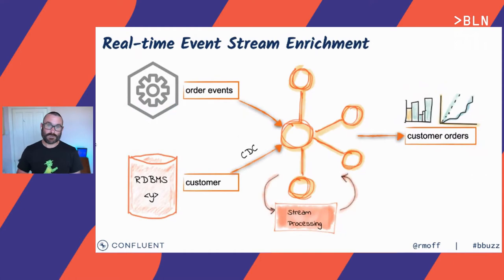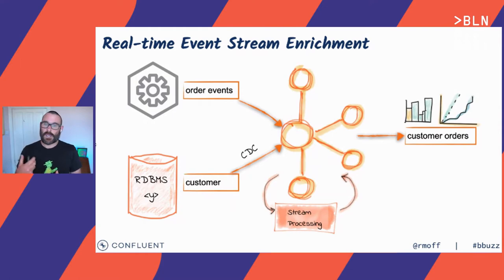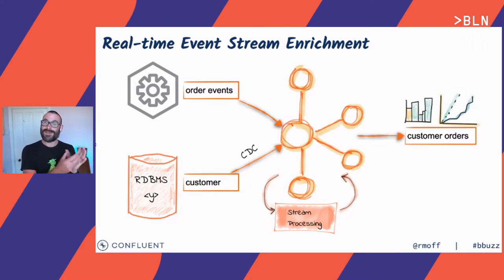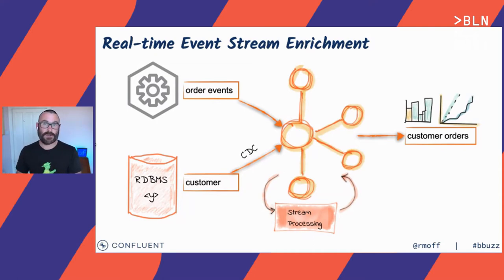Another use case is not just shoving data somewhere else, but using it in stream processing to enrich other data flowing through our streams. Perhaps we've got a microservice writing information about orders onto a Kafka topic, and we want to enrich that with customer details — like their email address, shipping address, or loyalty club status — that we tend to keep in databases. By pulling that data from a database and streaming it into Kafka, we can use stream processing to join it to events as they arrive, driving real-time dashboards and applications.